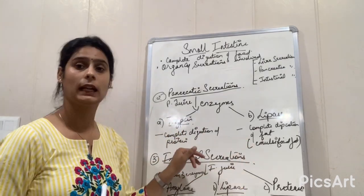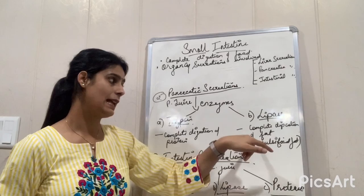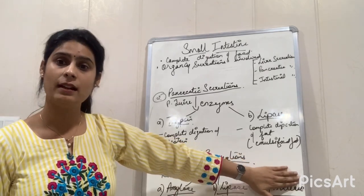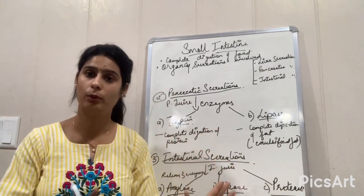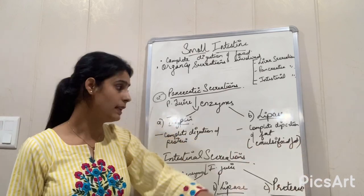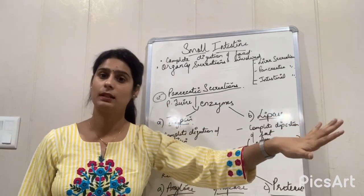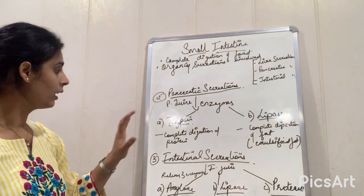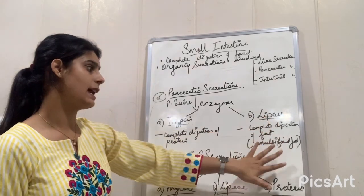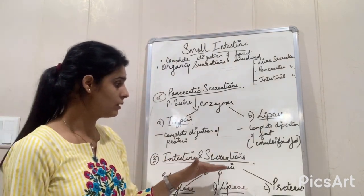Trypsin helps in the complete digestion of protein, whereas lipase helps in the complete digestion of fat or emulsified fat. The large globules were broken into smaller globules called emulsified fat. So trypsin helps in the complete digestion of protein, whereas lipase helps in the complete digestion of emulsified fat, breaking them into smaller particles.